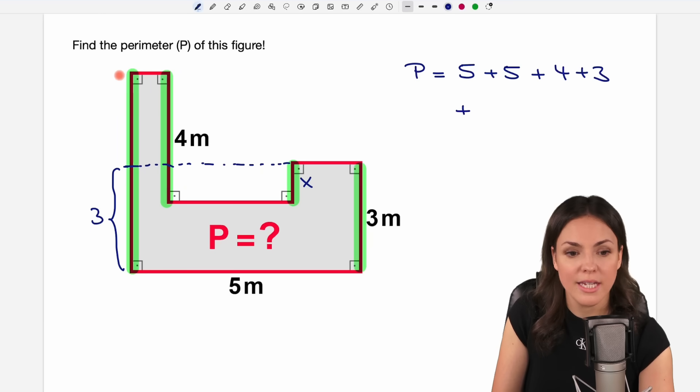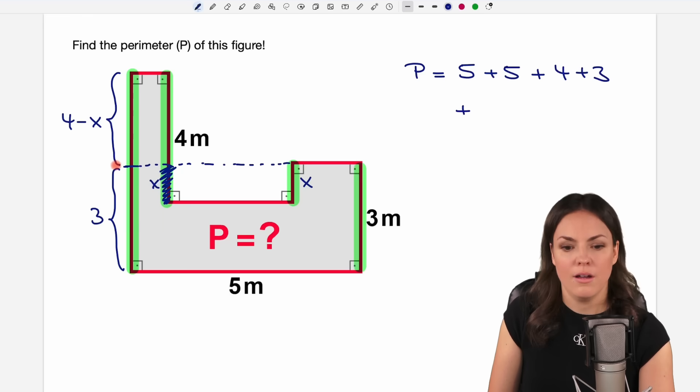And if we call this x, we can say how long this part is. Because if we would take the four, that would be too long. We only want this shorter part here. But if we subtract this part here, which is x, then we know how long this part here is. So it's the whole side, the four, minus the part we don't need, minus the x.